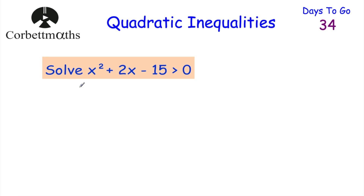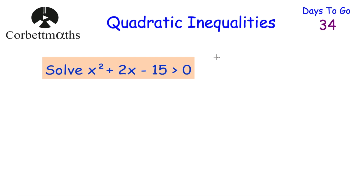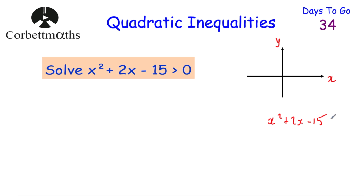Well done if you got that. Let's look at the next question. This time we've been asked to solve x squared plus 2x minus 15 is greater than 0. If you feel confident, feel free to press pause and try this now. To solve this, the first thing I would do is sketch the quadratic y equals x squared plus 2x minus 15, with the x axis and y axis, and find where it crosses the x axis by letting the quadratic equal 0.